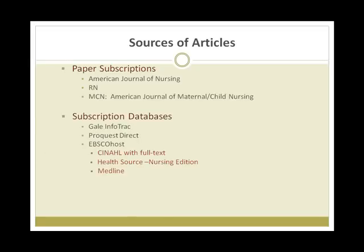Matheson Library subscribes to numerous online research databases. A database is a collection of magazine articles, scholarly journal articles, and newspaper articles searchable online. These are the same articles that are available in the paper copies and are therefore more reputable than many internet sources.